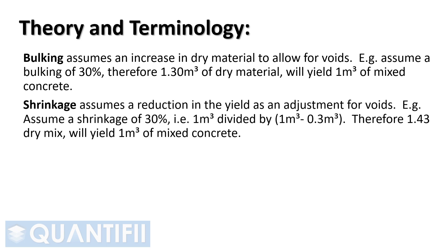Shrinkage assumes a reduction in the yield as an adjustment for voids. For example, assume a shrinkage of 30%, that is, 1 cubic meter divided by (1 cubic meter less 0.3 cubic meters). Therefore, 1.43 dry mix will yield 1 cubic meter of mixed concrete.